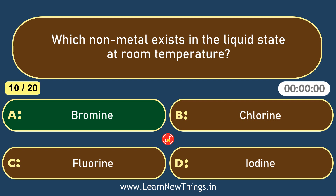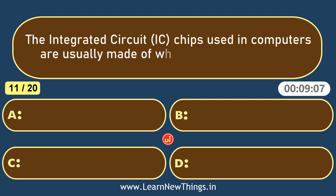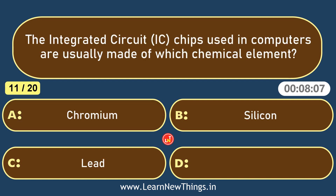The integrated circuit chips used in computers are usually made of which chemical element? Silicon.